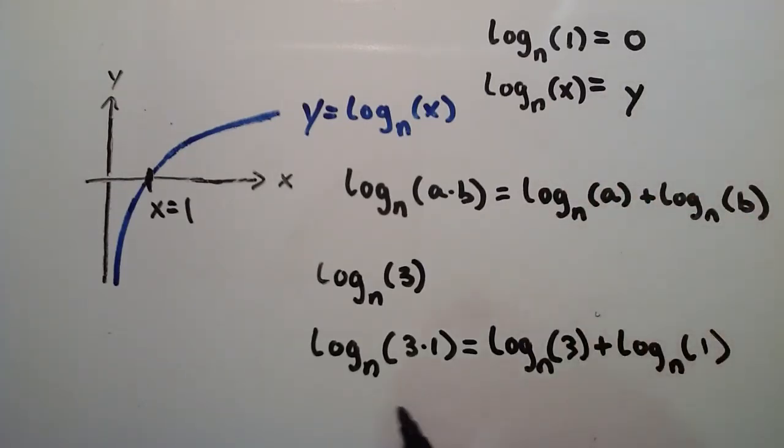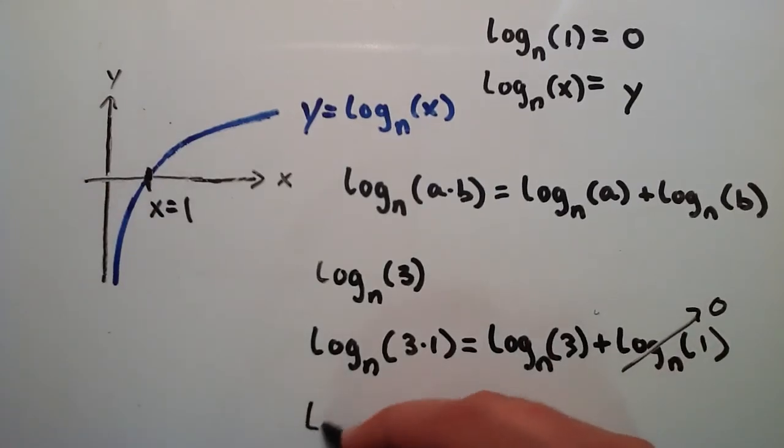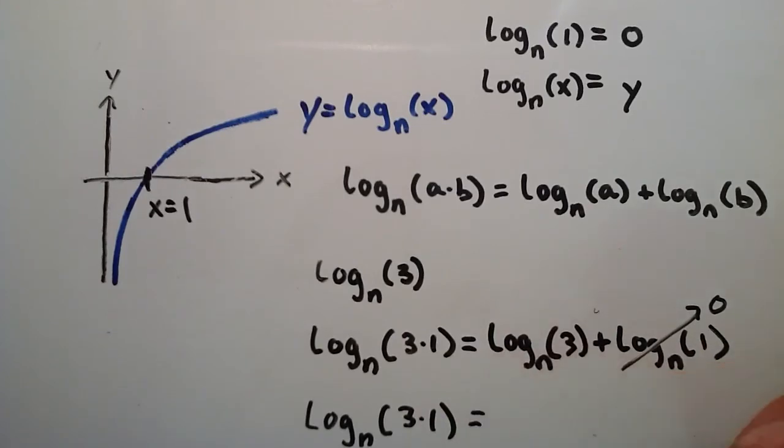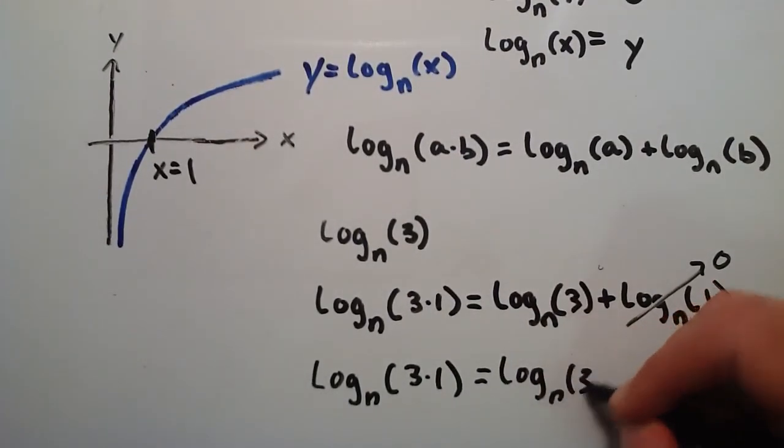And then from this property here, we know that log base n of 1 is equal to 0. So really, this takes us right back to, this goes to 0. So this takes us right back to log base n of 3 times 1 is equal to log base n of 3.